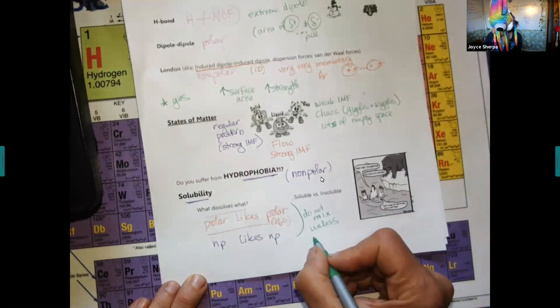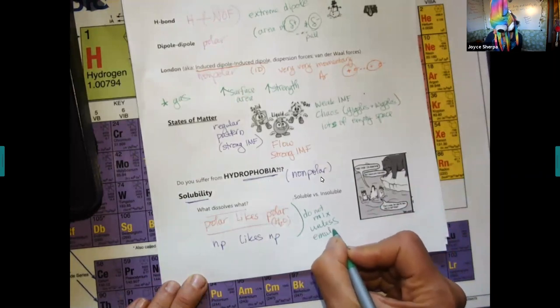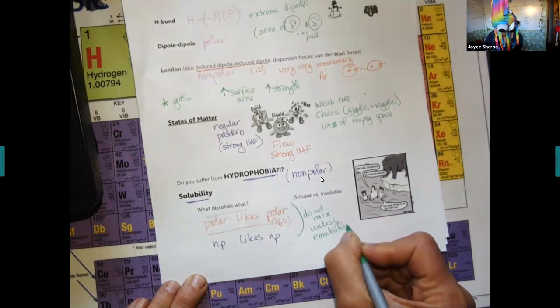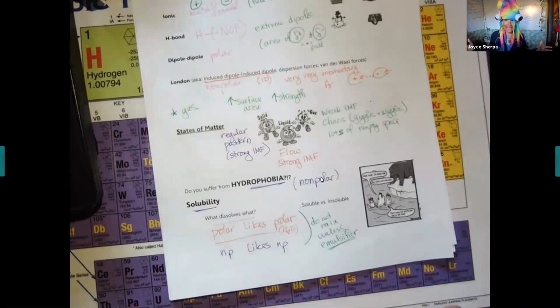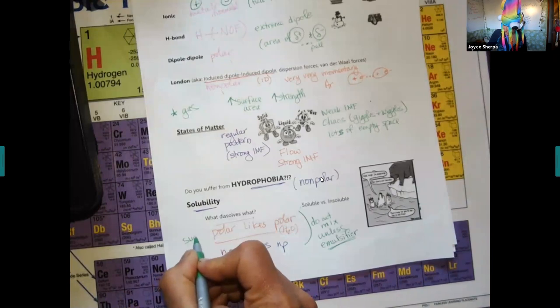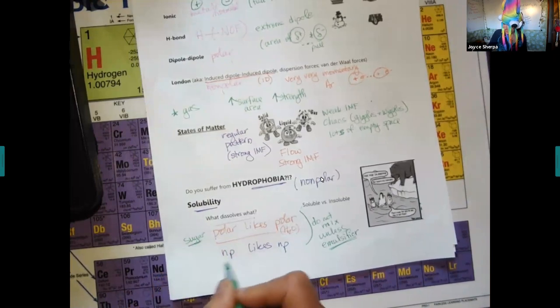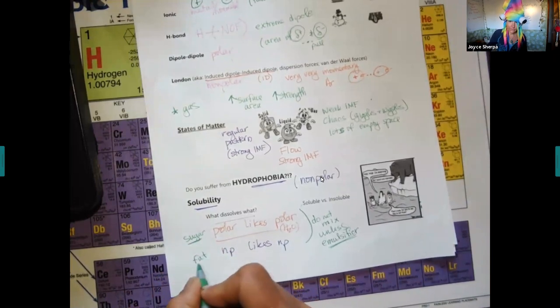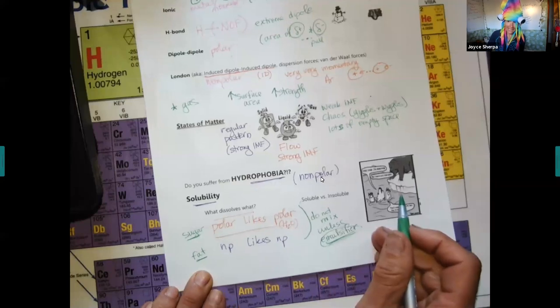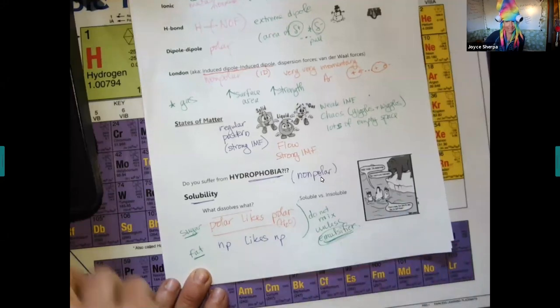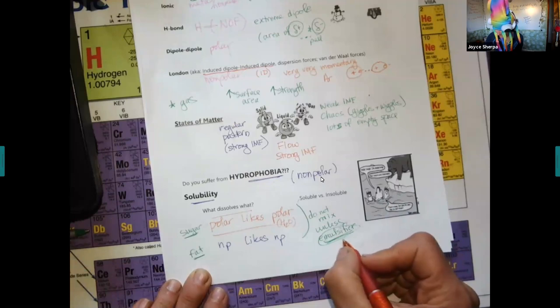Unless you have an emulsifier. Chocolate is sugar and fat. Sugar is polar, dissolves in water. Fat is nonpolar. Without the two, you don't have chocolate. But the two don't mix. So you need an emulsifier. An emulsifier is something that is, I don't know if I taught you guys this word, but it's good.